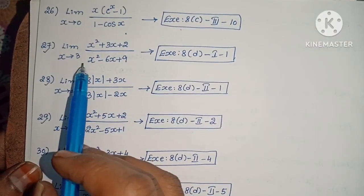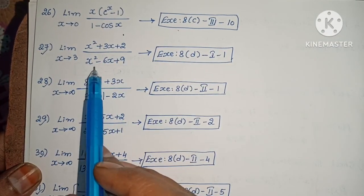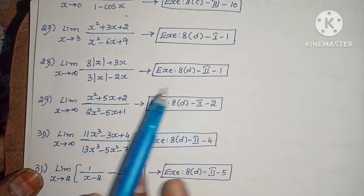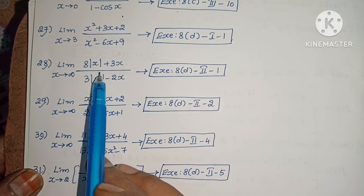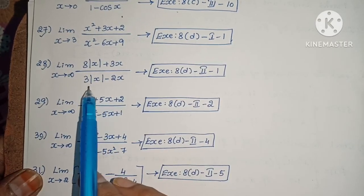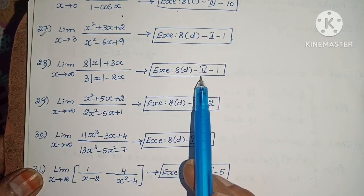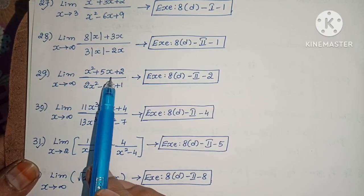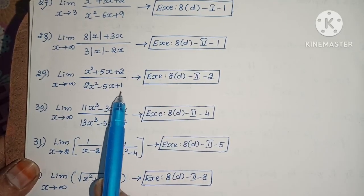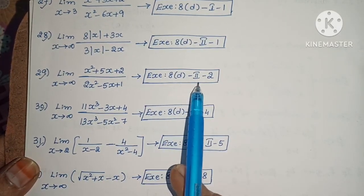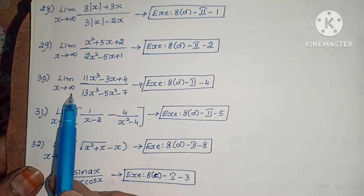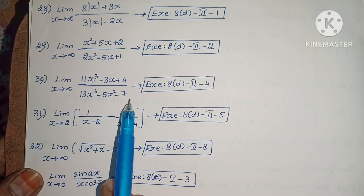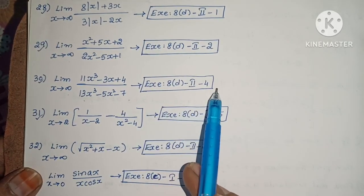Next: Limit extends to 3 of x squared plus 3x plus 2 by x squared minus 6x plus 9. Exercise 8c, first roman law, first one. Next: Limit extends to infinity of 8 into modulus x plus 3x by 3 modulus x minus 2x. Next: Limit extends to infinity of x squared plus 5x plus 2 by 2x squared minus 5x plus 1. Next: Limit extends to infinity of 11x cubed minus 3x plus 4 by 13x cubed minus 5x squared minus 7.